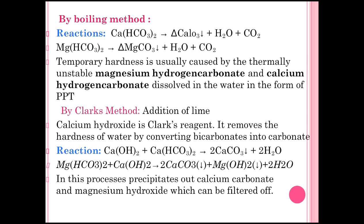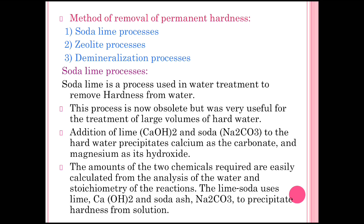When magnesium bicarbonate type of impurity is present in water and Clark's reagent (calcium hydroxide) is added, calcium carbonate settles as precipitate plus magnesium hydroxide precipitate is also formed. Both precipitates can be removed by filtration. These are the methods used to remove temporary hardness: Clark's method and the boiling process. Next is the method of removal of permanent hardness.